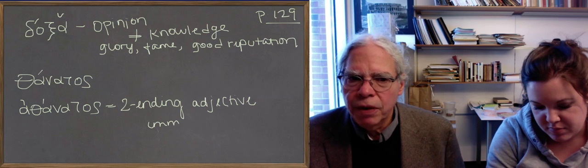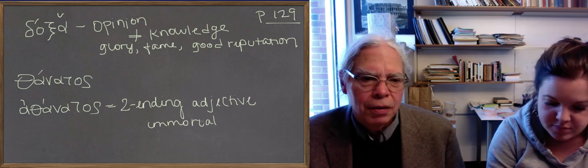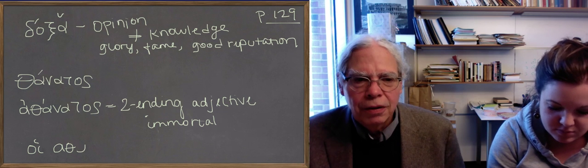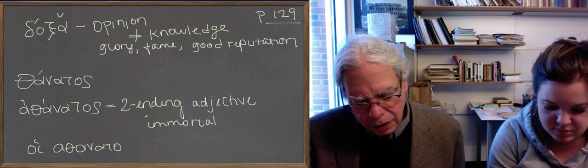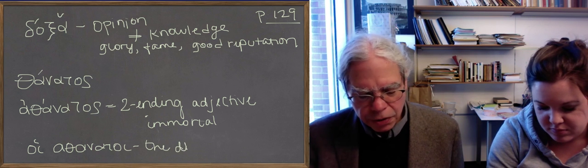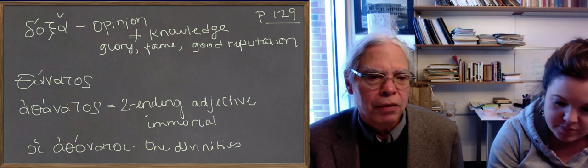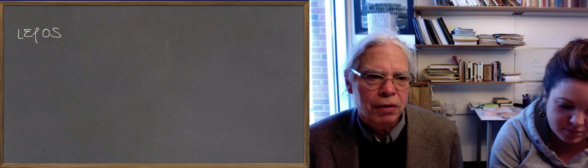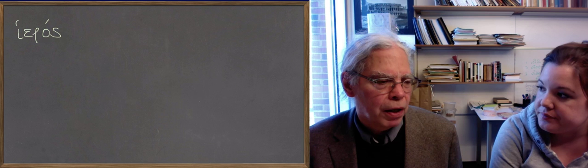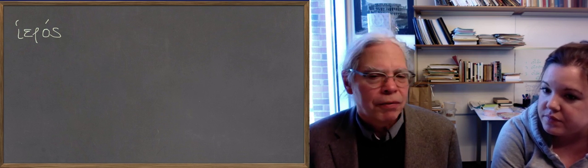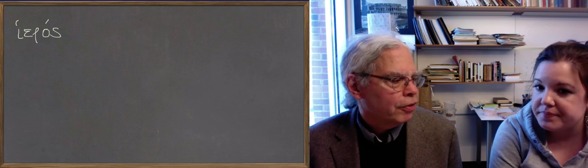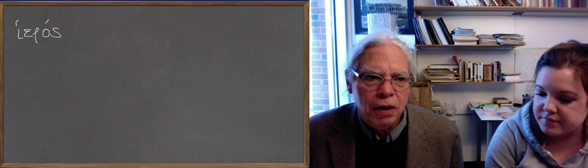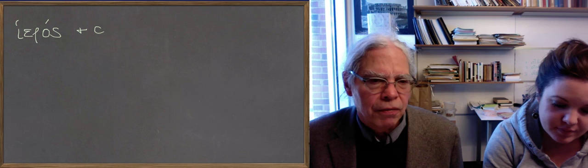So ἀθάνατος can mean a divinity just by itself, or οἱ ἀθάνατοι can mean the collection of divinities, but it's an adjective that doesn't have a separate feminine gender. That means immortal, but the one that looks masculine is both masculine and feminine. The one that looks neuter is neuter. There's another adjective that's meaning the after it, ἱερός, ἱερά, ἱερόν, means holy or sacred.